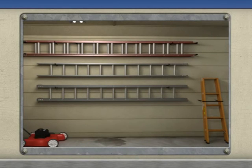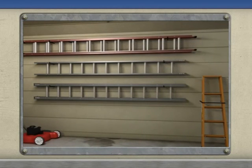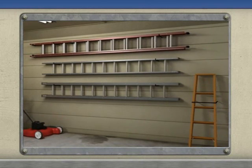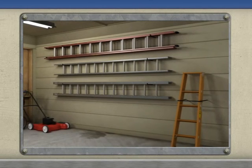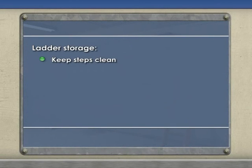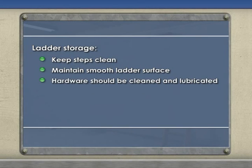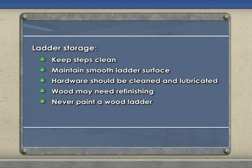Proper care and storage of ladders will reduce damage and extend the ladder's life. Ladders should be stored in designated locations that are clean and non-corrosive. Use racks or brackets and provide ample support to prevent warping when hanging ladders on walls. If ladders are stored on end, secure their upright stability with a rope, chain, or other suitable restrictive device. Keep ladder steps clean and free of oil, dirt, grease, and other slipping hazards. Maintain a smooth ladder surface to prevent snagging of clothing and puncture injuries. The ladder's functional hardware should be cleaned and lubricated regularly. Over time, wood ladders may need refinishing — never paint a wood ladder as the paint could hide serious defects. Instead, use a non-conductive clear coating such as varnish to protect the ladder.